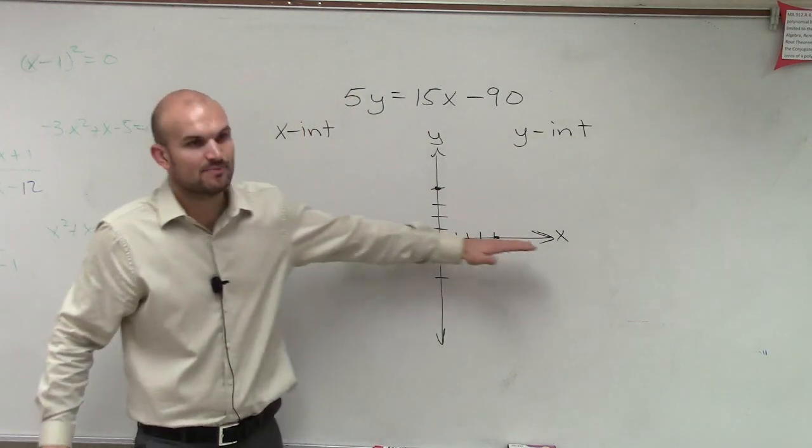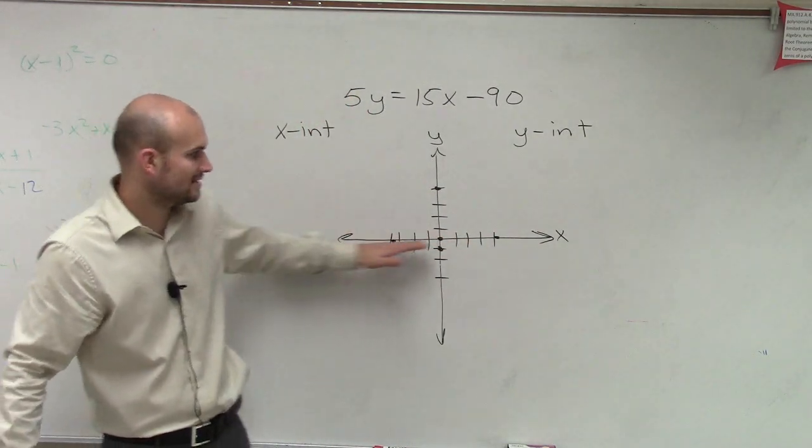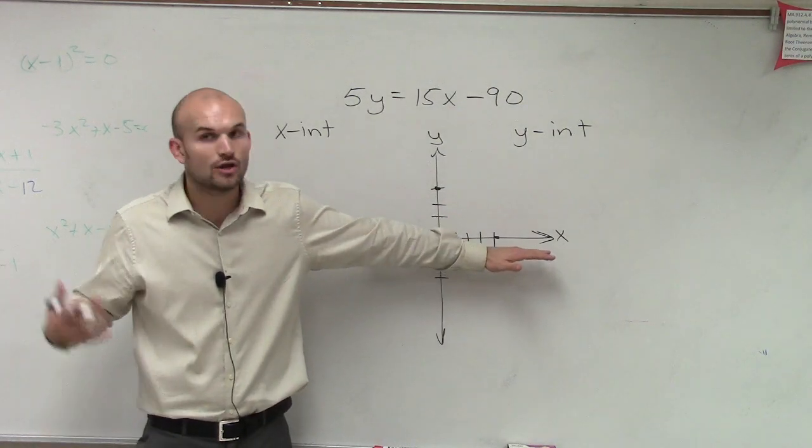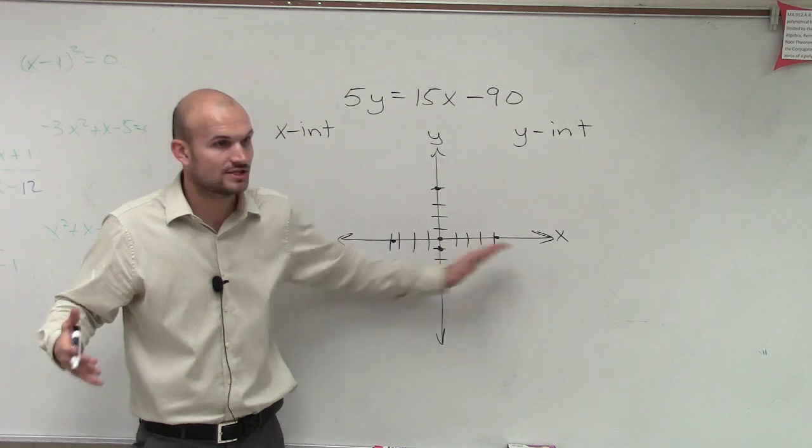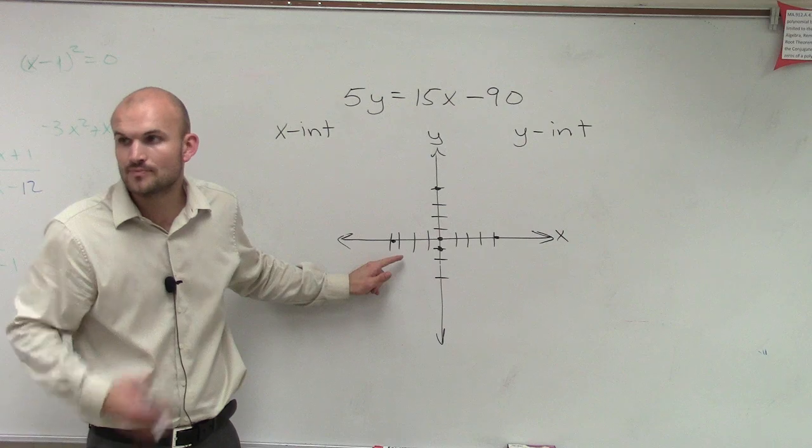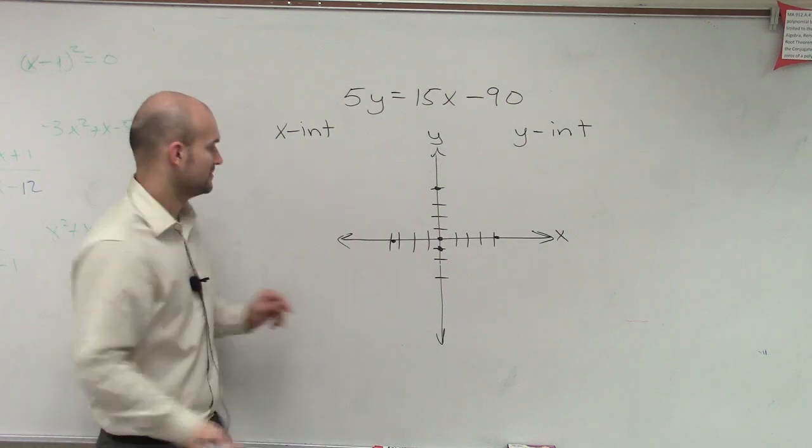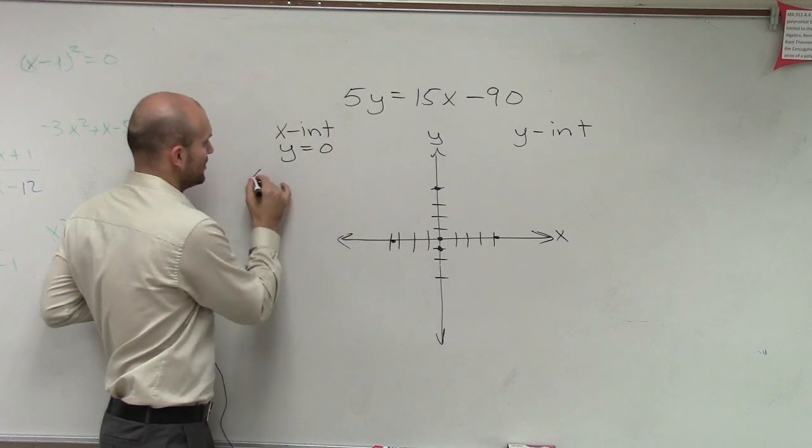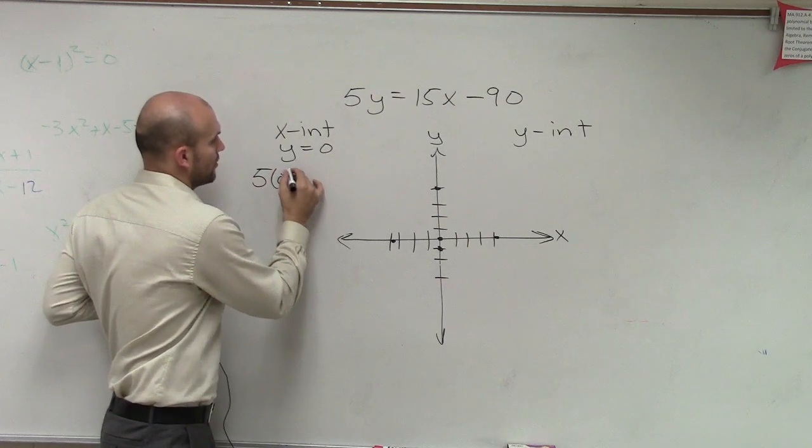Remember, x-intercepts are going to be a point that's when the graph crosses this x-axis. So the only thing I know, I don't know where it's going to cross, but I do know when it does cross, my y-value is going to be equal to 0. So what I do is I say y equals 0. So I plug now 0 in for y.